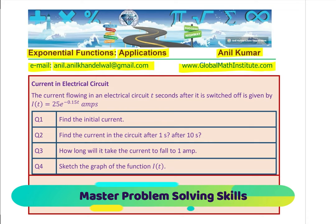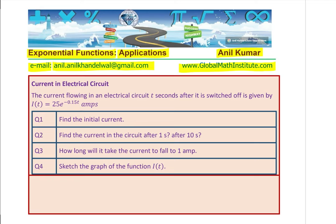Now, initial current really means that T is 0, so just substitute 0 to get the answer for question 1. For question 2, you substitute 1 and 10 for T. Question 3 is slightly tricky — it asks how long will it take for the current to fall to 1 ampere. We will try to understand this part of the problem in greater detail.